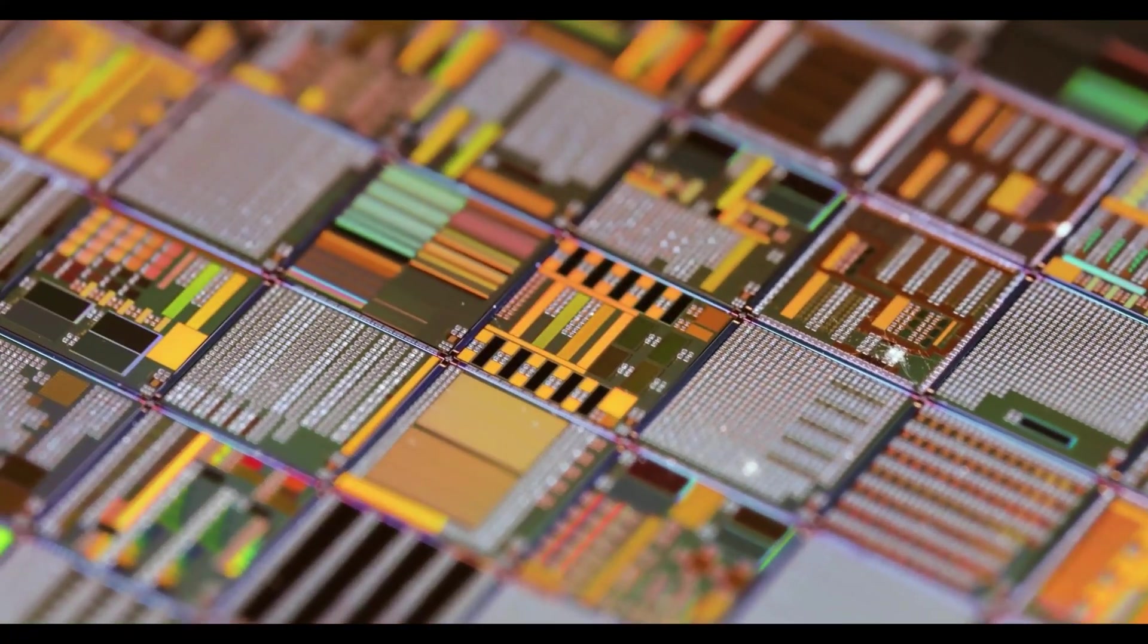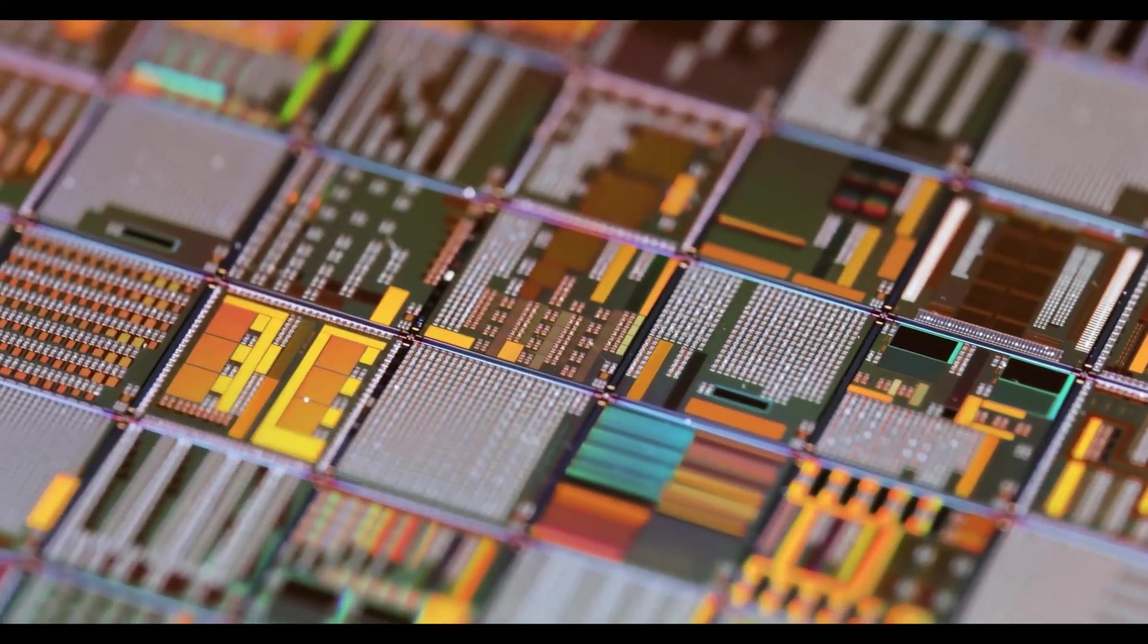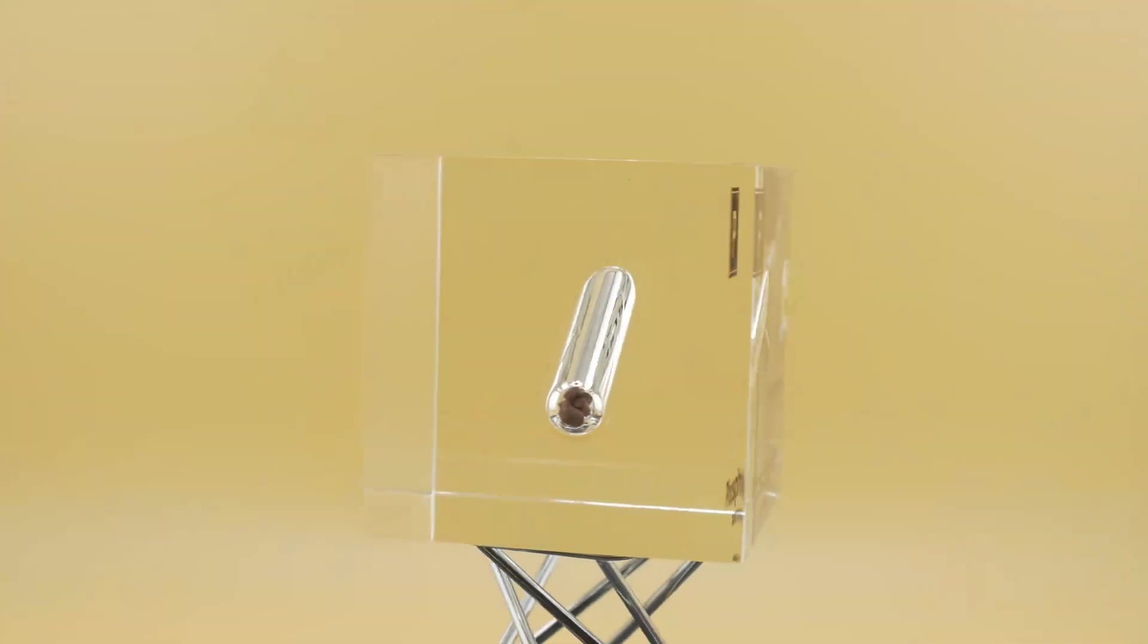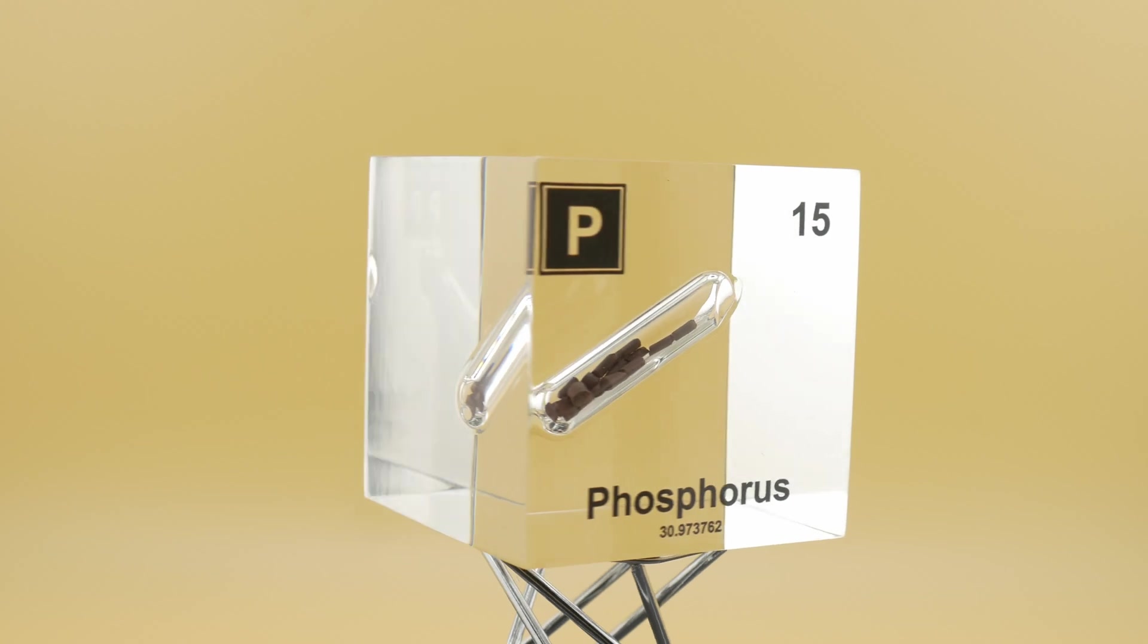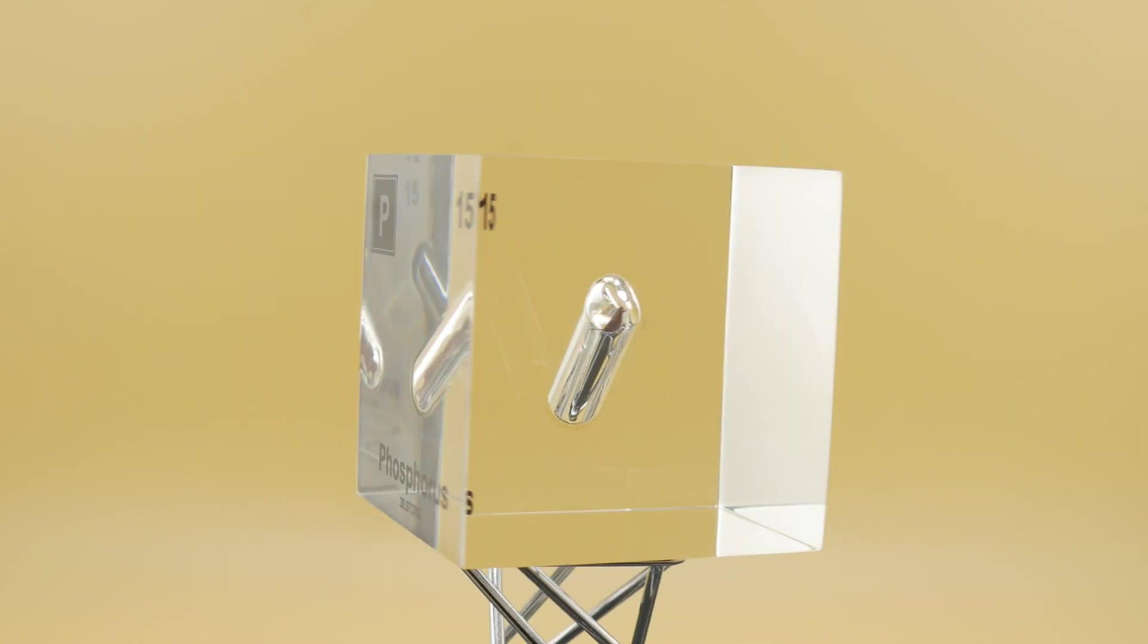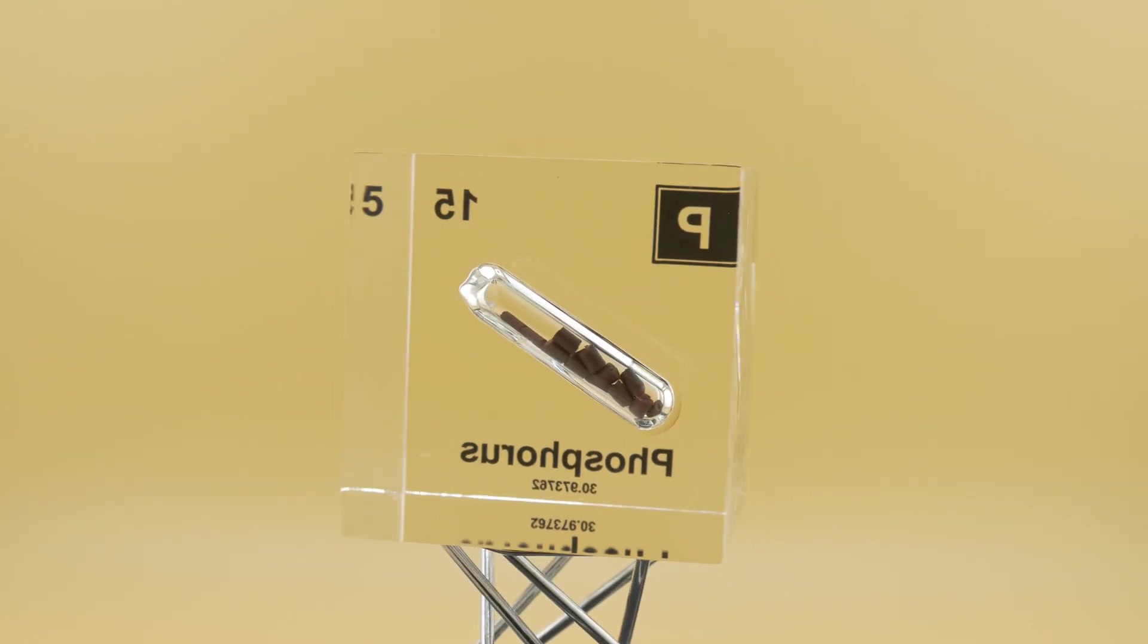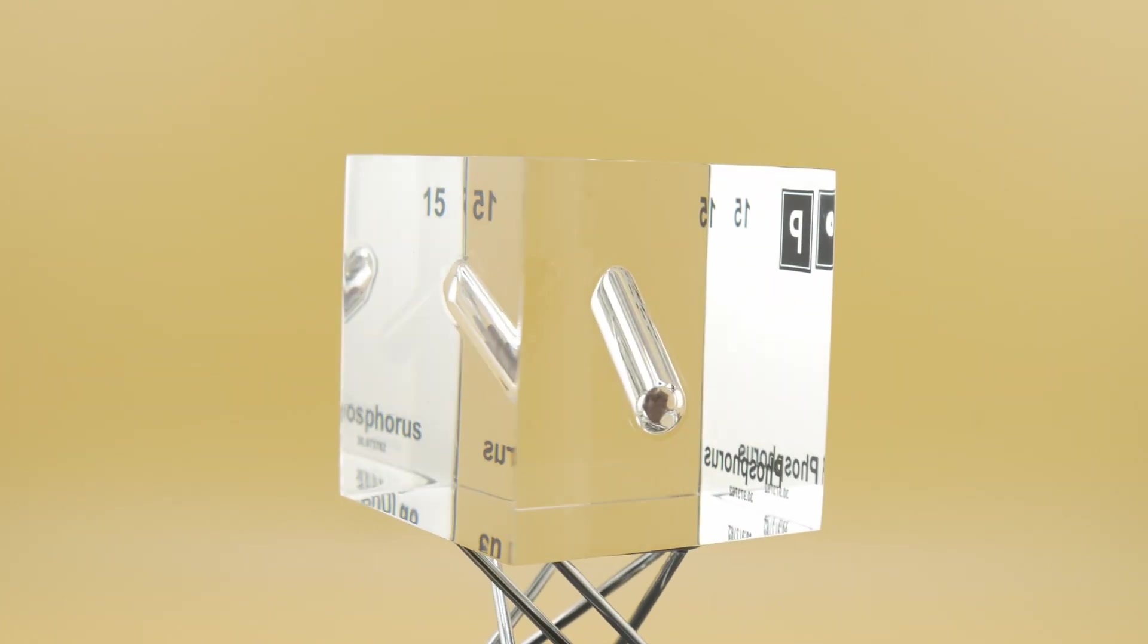Now we can also probably use it for semiconductors. Black phosphorus shows promise as a material for next generation electronic devices due to its excellent electrical properties. And we also use it in the military. White phosphorus has been used in munitions and smokescreens, though its use is controversial due to its toxic effects.